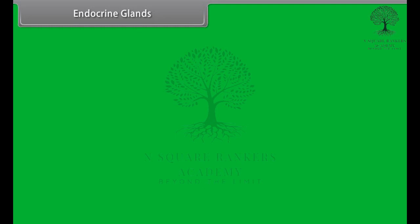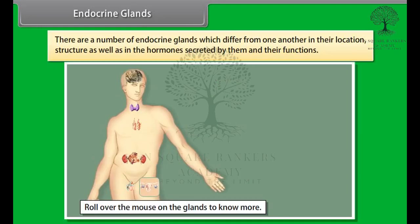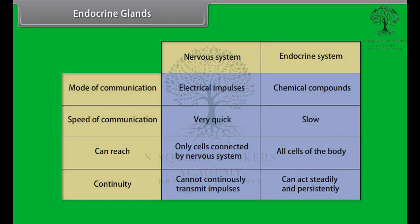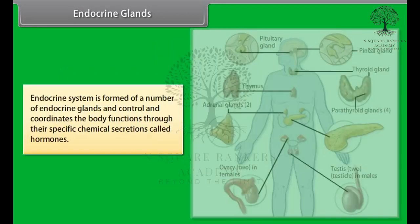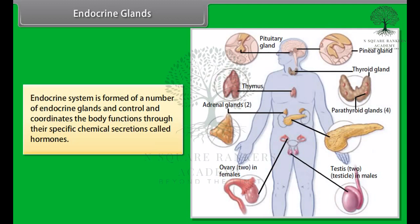There are a number of endocrine glands which differ from one another in their location, endocrine structure, as well as in the hormones secreted by them and their functions. The endocrine system is formed of a number of endocrine glands and controls and coordinates body functions through their specific chemical secretions called hormones.